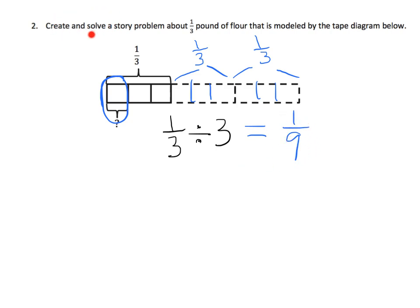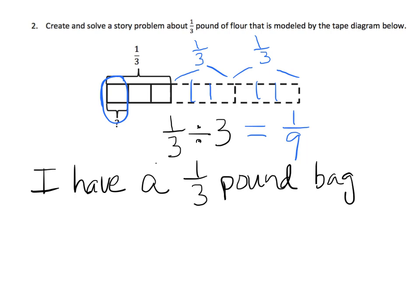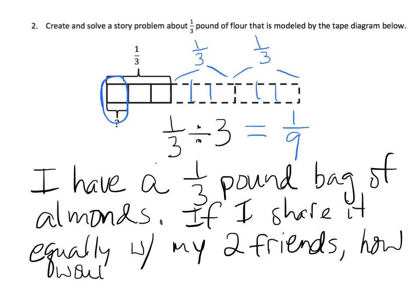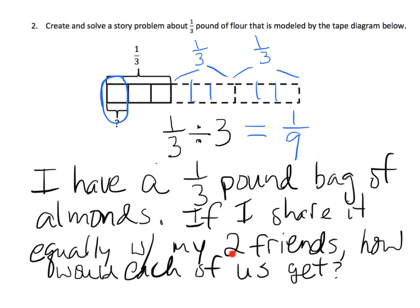Now the story problem that would go along with this, one example might be, I have a 1 third pound bag of almonds. I love almonds. If I share it equally with my two friends, how much would each of us get? And there's three people, even though it says two, because it's two friends, but I'm there, so there's three people. So we've got a third pound of almonds, and we're sharing it amongst three people. And how much would each person get? Well, each person would get a ninth of a pound of almonds.